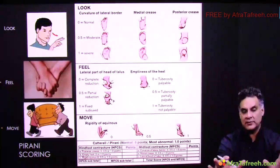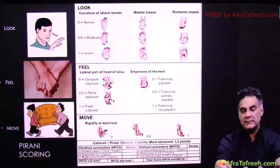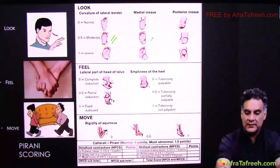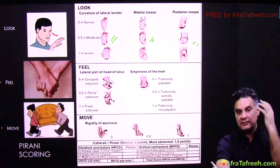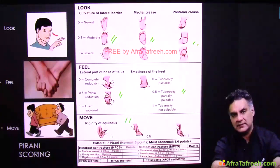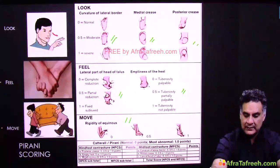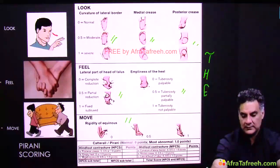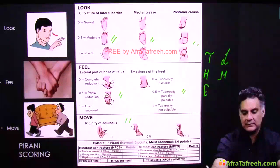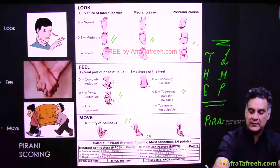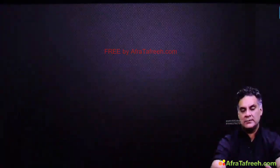There is a Pirani scoring for CTEV. The mnemonic LMP covers six features: Look for lateral curvature of the border, medial crease, and posterior crease; Feel for the head of talus and heel; Move for equinus. The word Pirani has six alphabets, so there are six features in Pirani scoring.